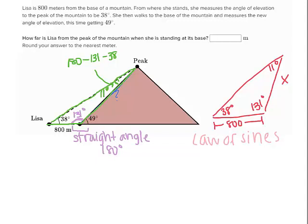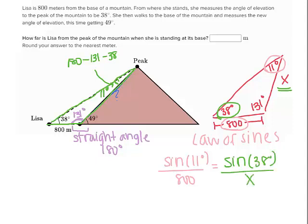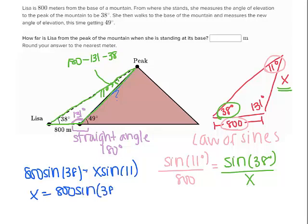Let's set it up. We have 800, so we're going to use the angle of 11 degrees. We say that sine of 11 degrees over 800 equals—we want x—so we use the angle across from it, which is 38 degrees. Now how do you solve this? Cross multiply. So 800 times sine of 38 equals x times sine of 11. Then to get x by itself, divide both sides by sine of 11.